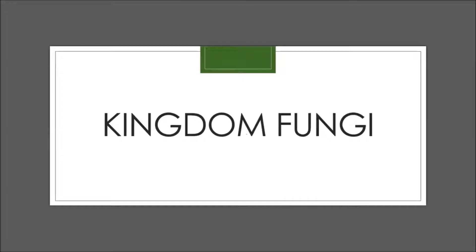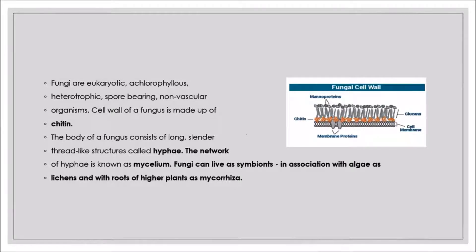Fungi are eukaryotic cells, so the cell organelles are well developed, but they lack chlorophyll. They are achlorophyllous and depend on other organisms — they are heterotrophic. Fungi have small spores so they are spore-bearing, and they are non-vascular, meaning xylem and phloem are absent. So fungi are eukaryotic, achlorophyllous, heterotrophic, spore-bearing, non-vascular organisms.